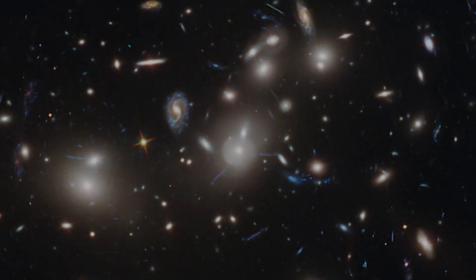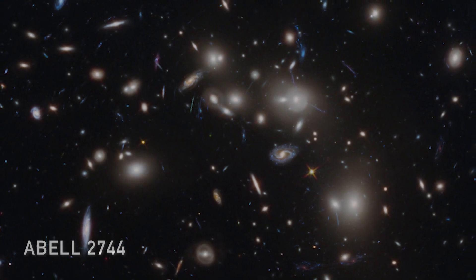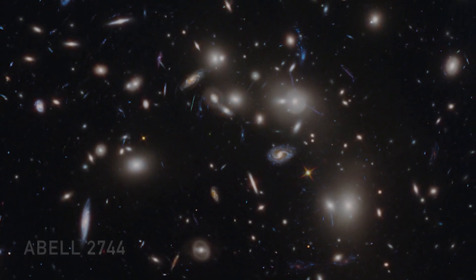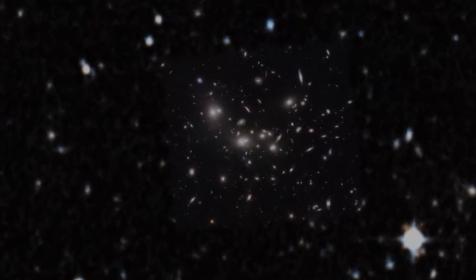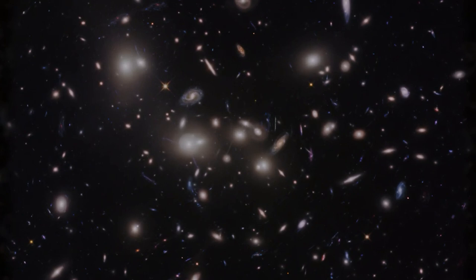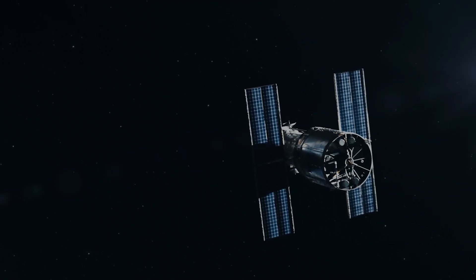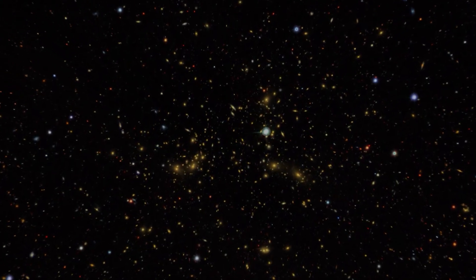The panoramic view showcased an astounding 50,000 sources of infrared light, revealing countless galaxies in various stages of evolution and activity. This view extended beyond the central region of Pandora's Cluster that Hubble had previously captured, offering an unparalleled glimpse into this cosmic landscape.